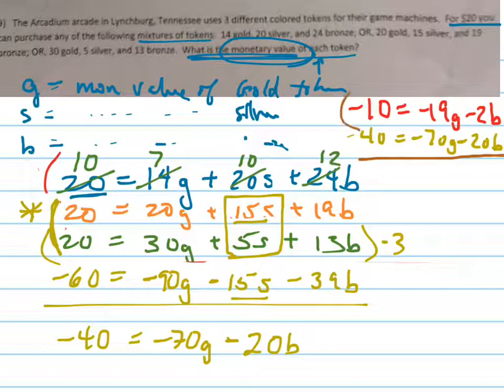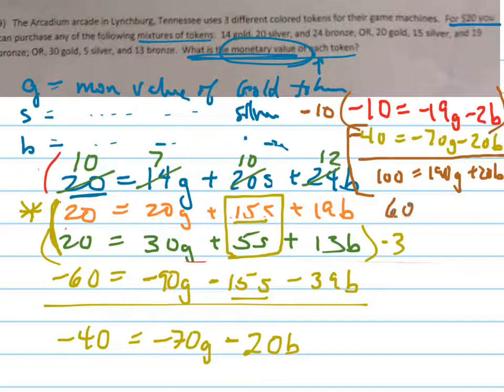And so my equation becomes 100 equals 190G plus 20B. And now when I add these two together, remember this was a negative 40 right there. When I add those two together, they become 60 equals 120G because the B's go away. So G equals 1 half.